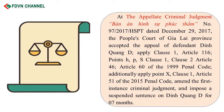At Appellate Criminal Judgment No. 97-2017-HSBT dated December 29, 2017, the People's Court of G.L.I. Province accepted the appeal of defendant Din Kuang D, applying Clause 1, Article 116, Points H, P, S, Clause 1, Clause 2, Article 46, and Article 60 of the 1999 Penal Code, additionally applying Point X, Clause 1, Article 51 of the 2015 Penal Code, amending the first instance judgment and imposing a suspended sentence of 07 months on Din Kuang D.